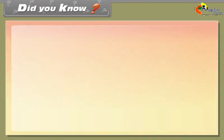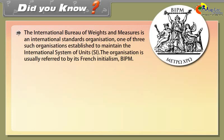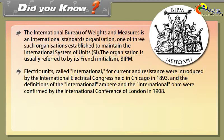Did you know? The International Bureau of Weights and Measures is an international standards organization, one of three such organizations established to maintain the International System of Units SI. The organization is usually referred to by its French initialism BIPM. Electric units called international for current and resistance were introduced by the International Electrical Congress held in Chicago in 1893, and the definitions of the international ampere and international ohm were confirmed by the International Conference of London in 1908.